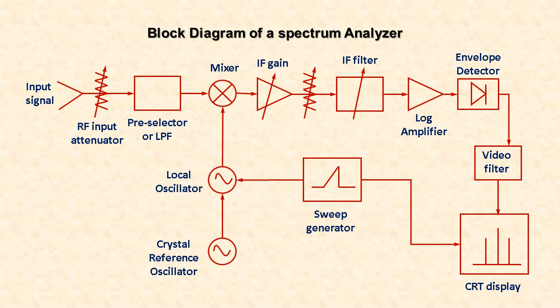A simplified block diagram of a super-heterodyne spectrum analyzer is shown in the figure. The input signal passes through an attenuator, then through a low-pass filter or pre-selector, and a mixer where it mixes with a signal from the local oscillator. The frequencies at the output of the mixer are the original input signals plus the sum and difference frequencies of the two signals. The difference frequency is called the intermediate frequency (IF) signal. The IF filter is a band-pass filter used as a window for detecting signals.